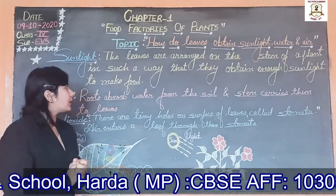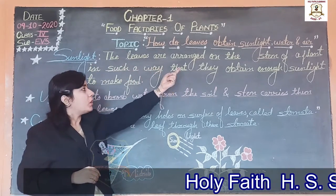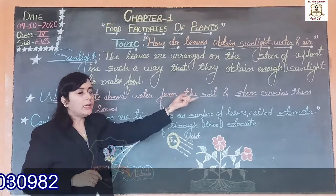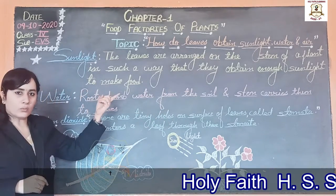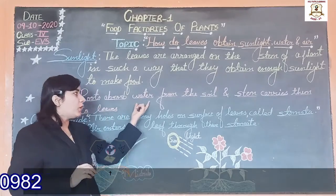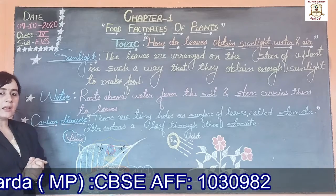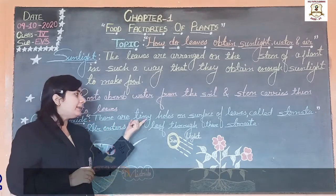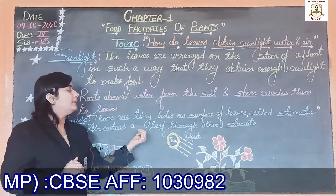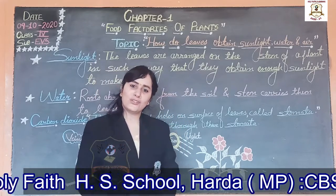Now let us revise once again. First, how do leaves get sunlight? The leaves are arranged on the stem in such a way that they obtain enough sunlight to make food. Next, how do leaves get water? Roots absorb water from the soil. And third, how do leaves get carbon dioxide? There are tiny holes on the surface of leaves called stomata, and air enters a leaf through these stomata. I hope you understood this topic. That is all for today's class. Thank you.